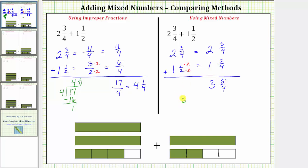To do this, we divide five by four. There is one four in five. One times four is four, and the difference is one. The quotient is one and one-fourth, which means three and five-fourths is equal to three plus one and one-fourth, which is the same as four plus one-fourth, which equals four and one-fourth. So the final sum as a mixed number is four and one-fourth.